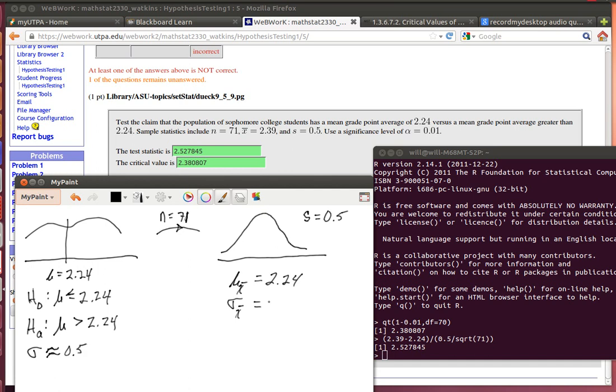Then with that estimate, the standard deviation here could be estimated as 0.5 divided by the square root of 71.